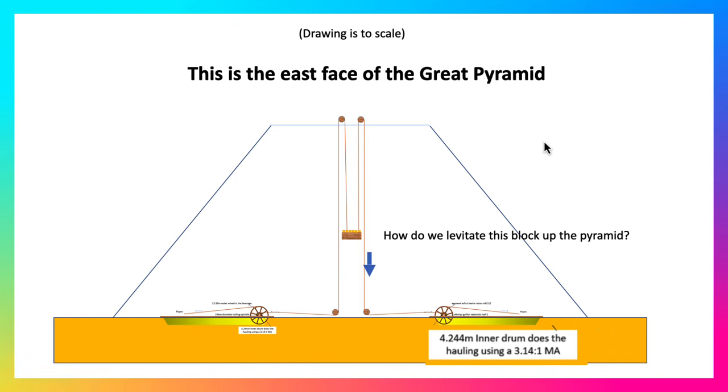So by pulling on these ropes, a number of men would get those ones going that way, and that would lead these ropes to go up, and that's how you're going to levitate your block.